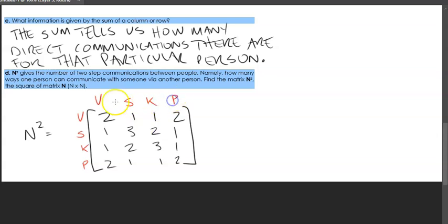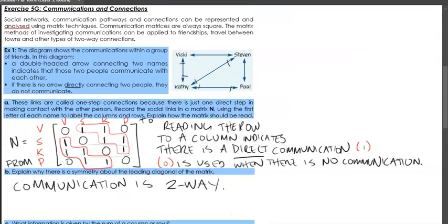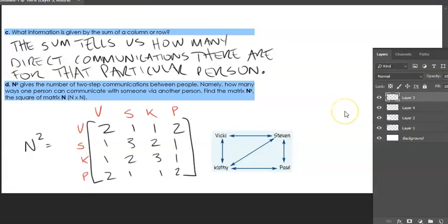The numbers that's within the leading diagonal. So when we look at this information here, from Vicky to Vicky, you'll notice that there's not a zero anymore. There's actually two. That just means how many ways can Vicky talk to herself via another person? So Vicky can talk to herself by going from Vicky to Kathy back to Vicky. So there's one person within that process. Or Vicky can talk to herself via Stephen and back to Vicky.